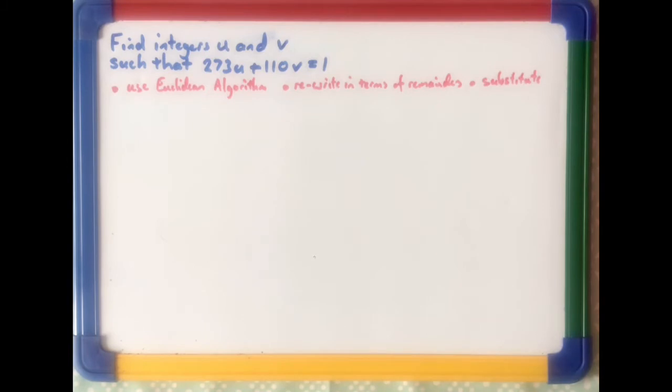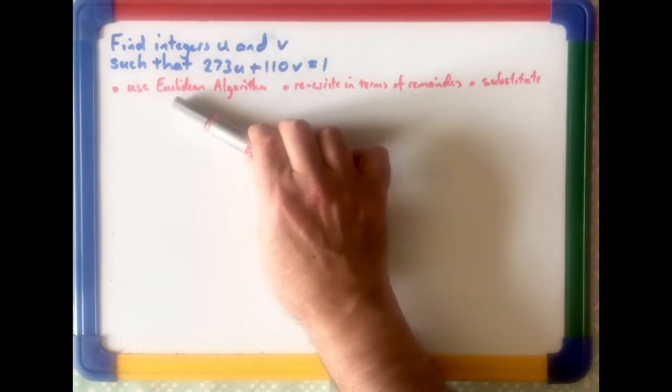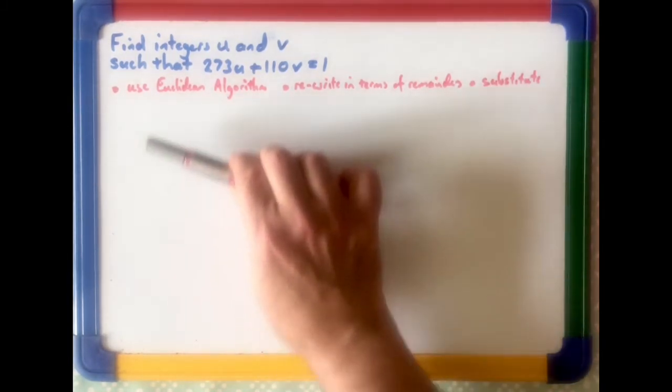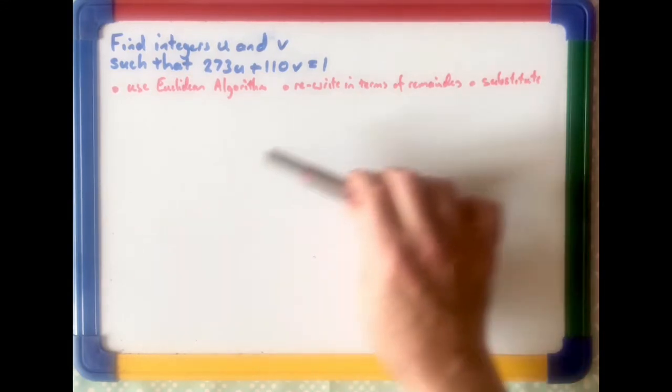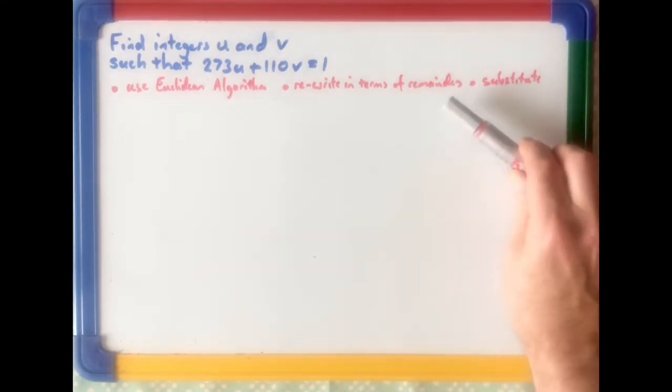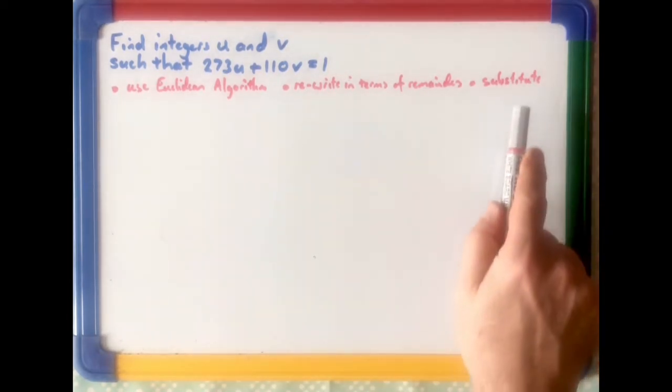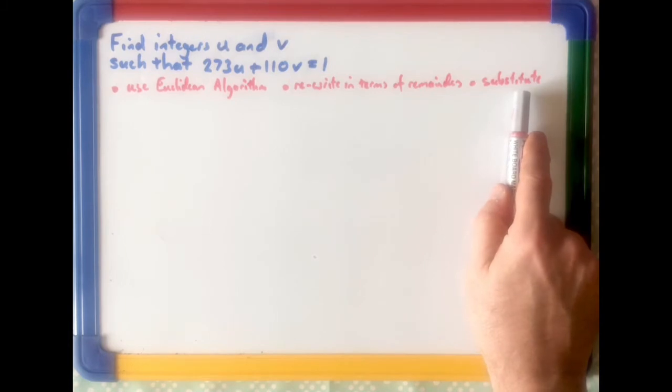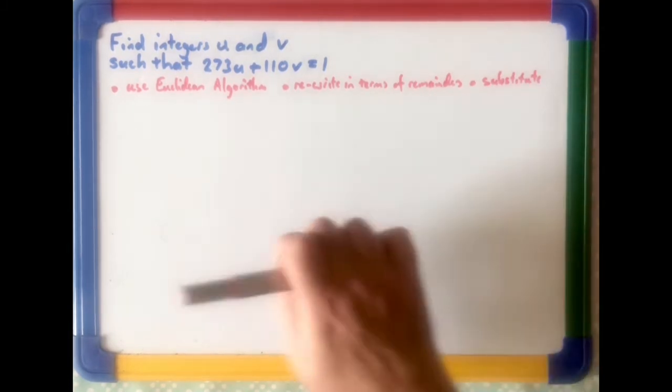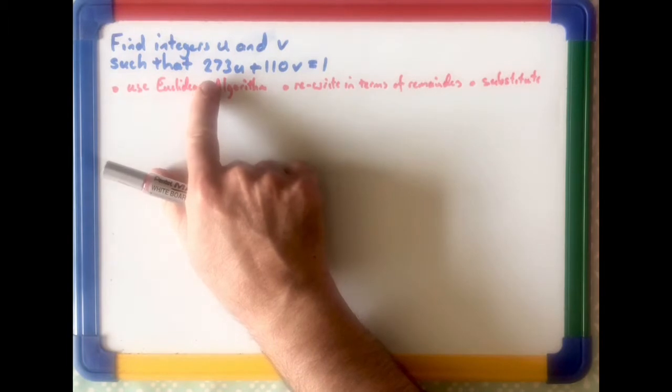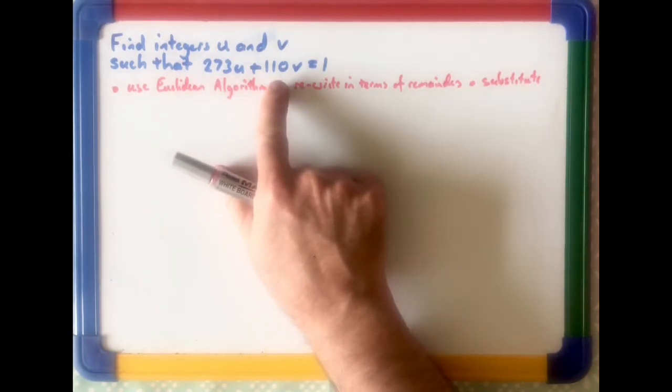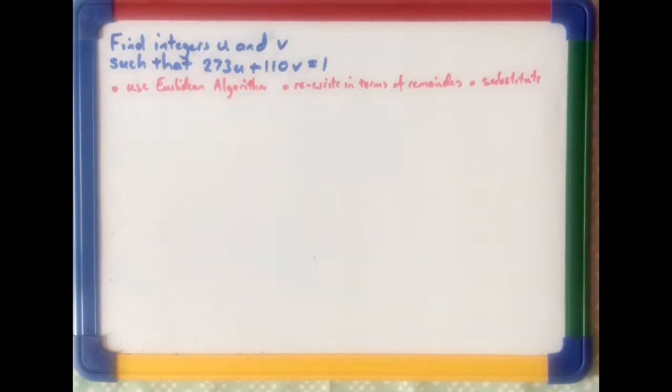Now, to do this sort of problem, first of all, we use the Euclidean algorithm, as we did last time. Then we rewrite in terms of the remainders. And then what we do after we've done that is we substitute back upwards until we've got everything in terms of 273 and 110.